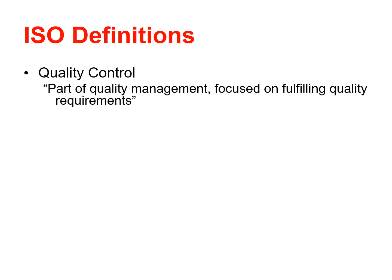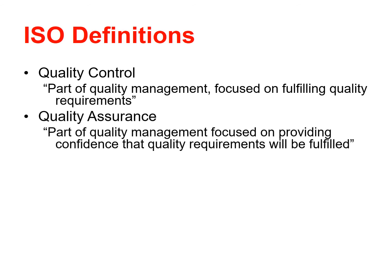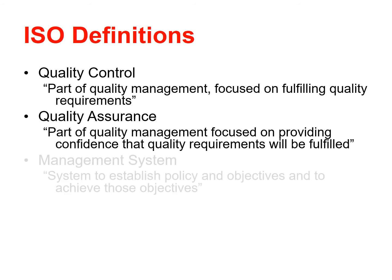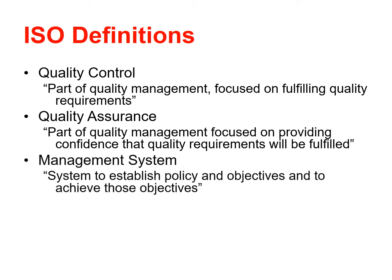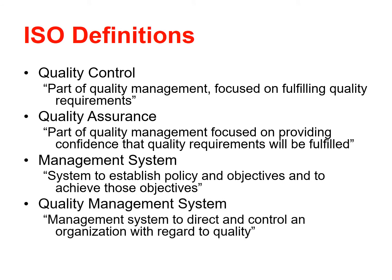Quality control, part of quality management, is focused on fulfilling quality requirements. Quality assurance, part of quality management, is focused on providing confidence that quality requirements will be fulfilled. A management system establishes policy and objectives and achieves those objectives. A quality management system directs and controls an organisation with regard to quality.